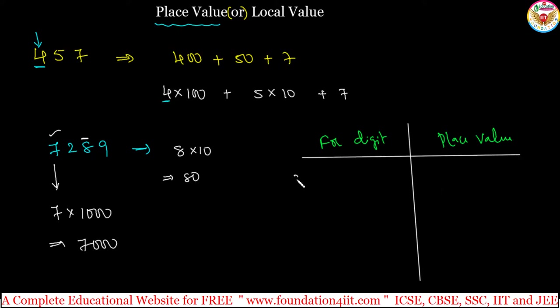For example, 3 in 2304. The place value of 3 in 2304 is 300. 3 is in the hundreds place, the position of the value.